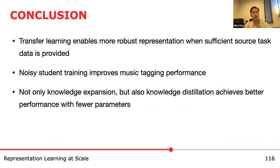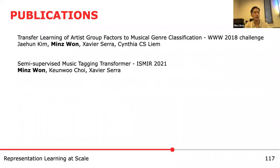In conclusion for this chapter: transfer learning enables more robust representation when sufficient source task data is provided. Noisy student training successfully improves music tagging performance by taking advantage of large-scale unlabeled data. And knowledge distillation also achieves better performance than supervised learning with fewer parameters. The published works include winning the music genre classification challenge using transfer learning, and introducing noisy student training for music tagging in the music tagging transformer paper.